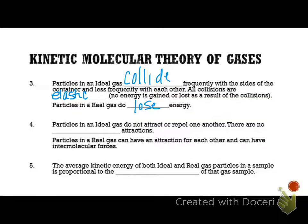Number four states that particles in an ideal gas do not attract or repel one another. In other words, there are no intermolecular forces. Remember we talked about that back in the bonding unit, where there's an attraction for each other on the particles. In an ideal gas, ideally there's no attraction. However, in a real gas, they do have an attraction for each other and can have intermolecular forces. That's quite frankly how we were able to get liquid nitrogen and liquid argon, because there is some attraction for each other.